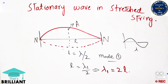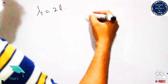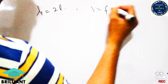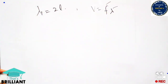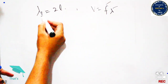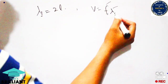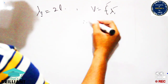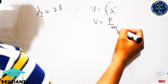We will use this in the next step, where we also apply v equals f times lambda for wave motion, relating frequency, velocity, and wavelength. Here f is frequency and lambda is wavelength. For Mode 1 it becomes: v₁ equals f₁ times lambda₁.